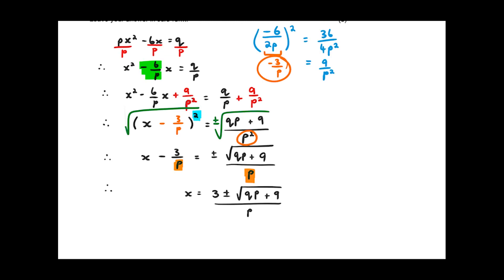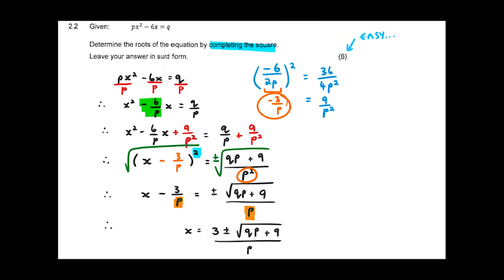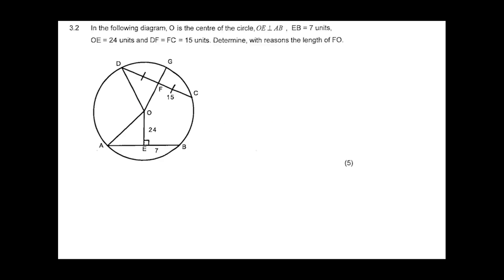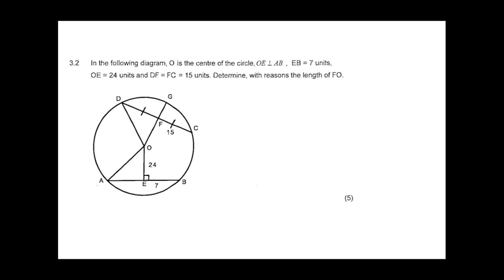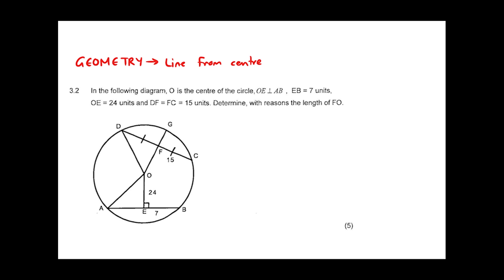It might look like a difficult question, but if you follow those steps you get a free six marks. The final question from the 2019 block test is on geometry — more specifically the line from center theorem. From what you did in class, you'll know we have the theorem and its converse.